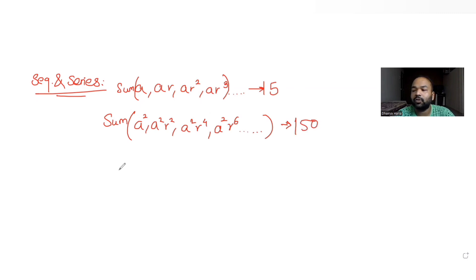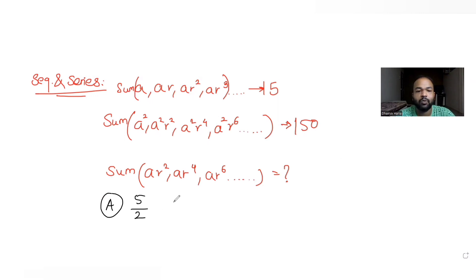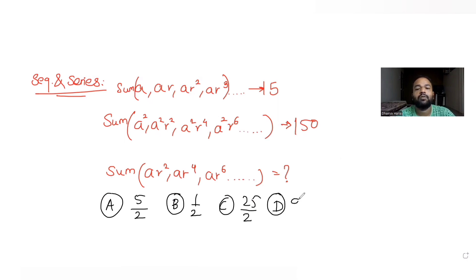We have been asked to find the sum of the terms a·r², a·r⁴, a·r⁶, and so on. There are four options given: the first option is 5/2, the second is 1/2, the third is 25/2, and the last is 9/2. We need to figure out which one is the correct answer.